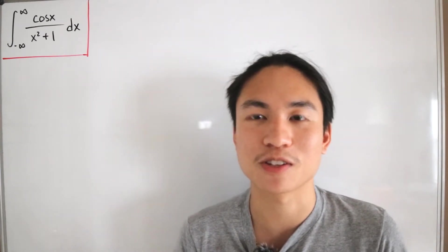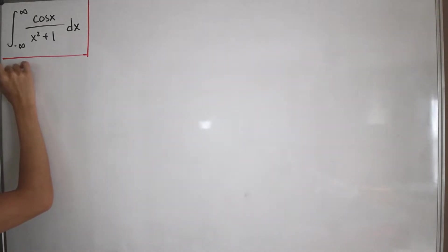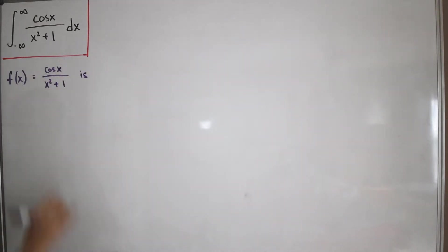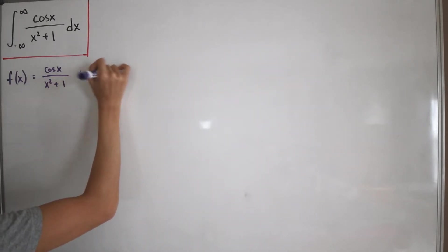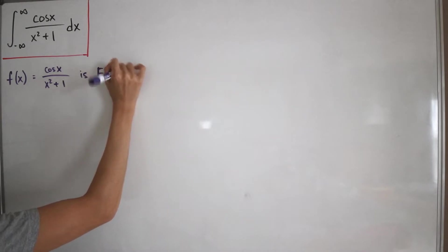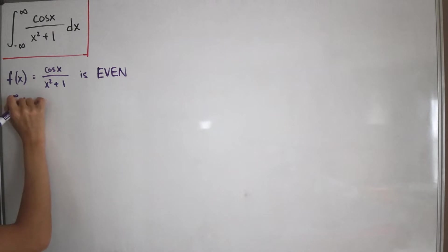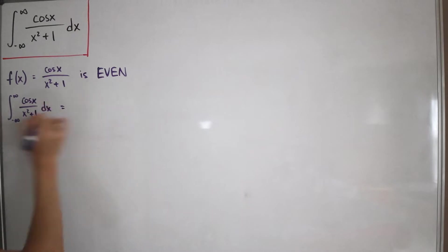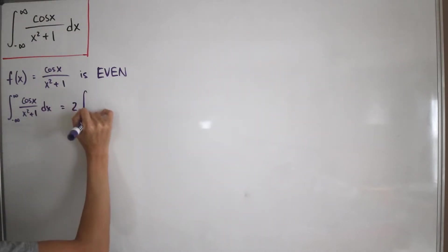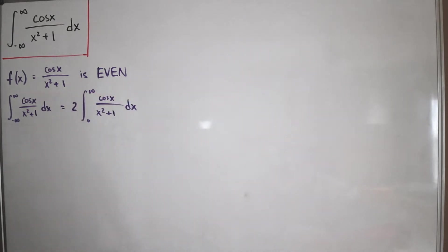Let's take a look at our integrand, cosine of x divided by x squared plus one, and call it f(x). Notice that the function is actually even — if you plug in negative x, everything is even on the top and on the bottom. So by rewriting the integral, the integral from negative infinity to positive infinity of our integrand can be written as two times the integral from zero to infinity of the same integrand.